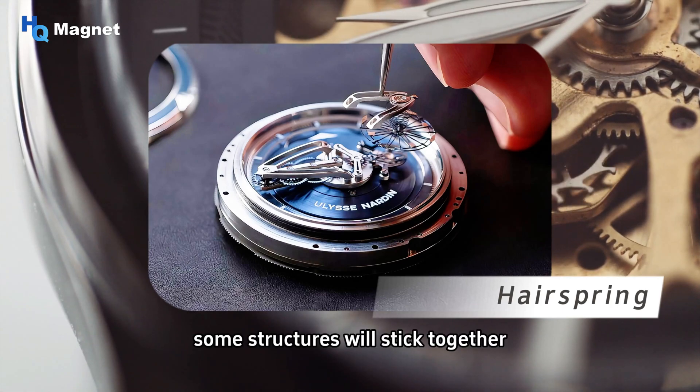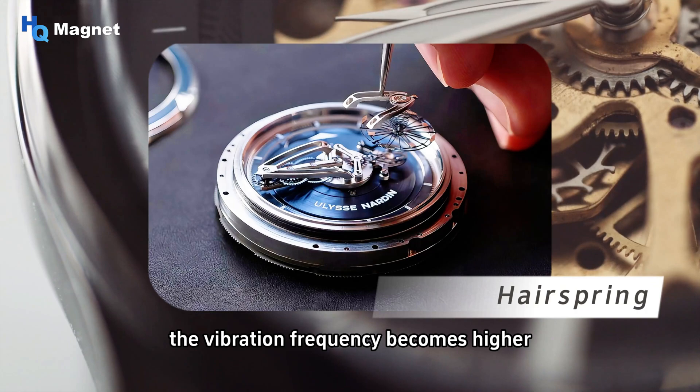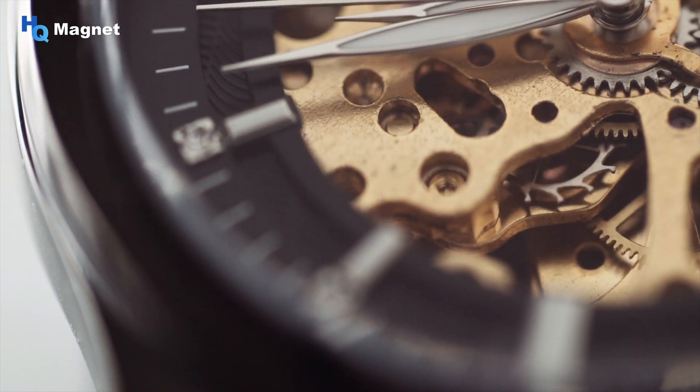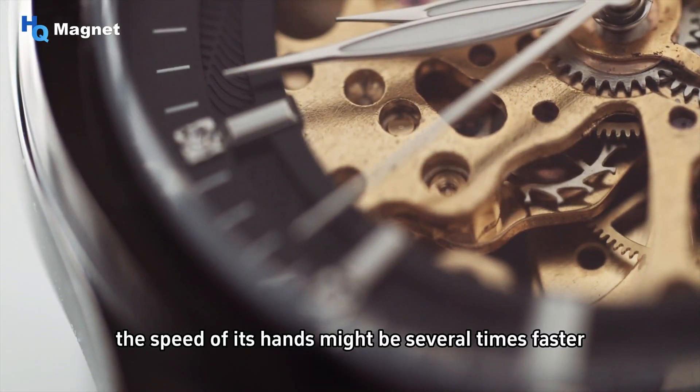The most common situation is that when the hairspring is magnetized and the coil is close, some structures will stick together. The hairspring becomes shorter, the vibration frequency becomes higher, and the speed of the pointer will increase. If a watch is placed on a huge speaker, the speed of its hands might be several times faster.